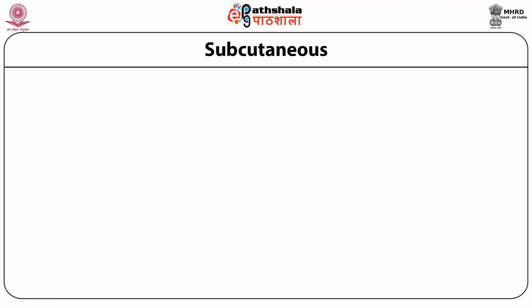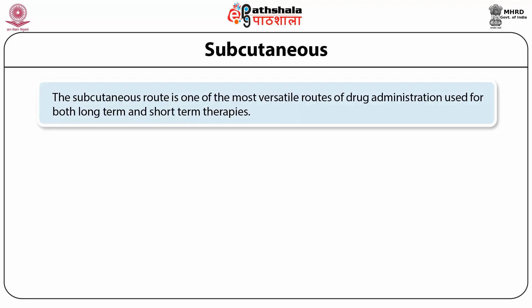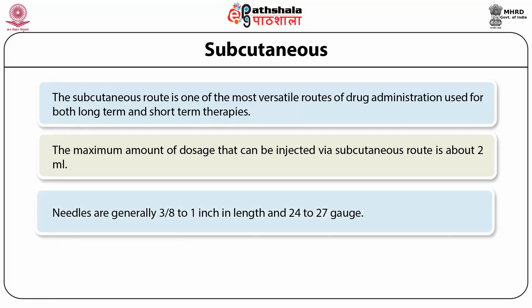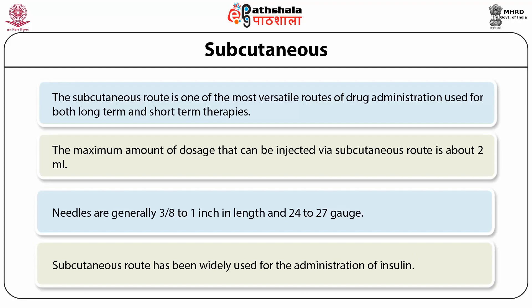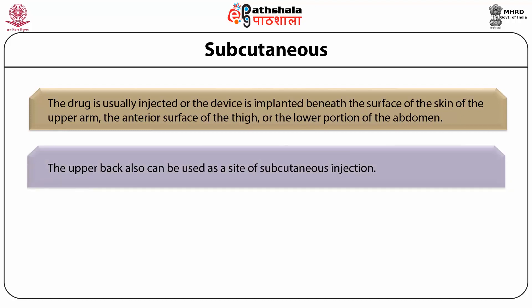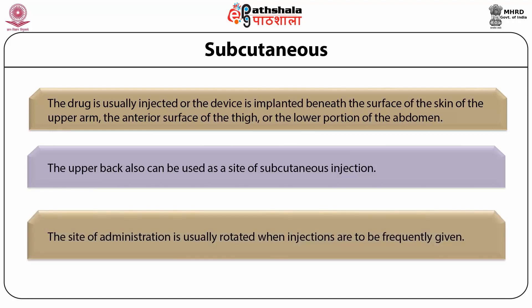The subcutaneous (SC) route is one of the most versatile routes of drug administration, used for both long-term and short-term therapies. The maximum dose injected via SC is about 2 ml. Needles are generally 3/8 to 1 inch in length, 24 to 27 gauge. SC administration has been widely used for insulin. The drug is injected or device implanted beneath the skin of the upper arm, anterior thigh, or lower abdomen. The site is usually rotated when injections are given frequently.